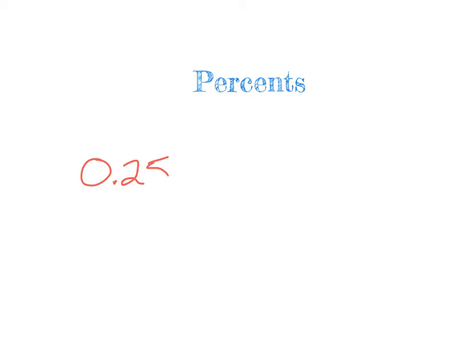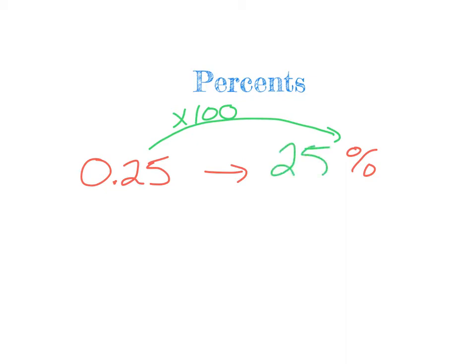I want to show you a couple things we can do with percents. I want to start by showing how we can convert percents to decimals and decimals to percents — it's super easy because it's just a simple movement of the decimal. If I have the decimal 0.25 and I want to know what that is as a percent, technically when going from a decimal to a percent we're multiplying that number by 100. So 0.25 times 100 is just 25.